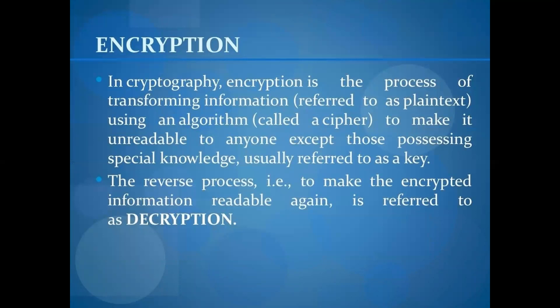Encryption is the process of transmitting information using an algorithm to make it unreadable to anybody except those with special knowledge, usually referred to as a key. The reverse process — making the encryption readable again — is known as decryption. Decryption is the inverse process of encryption.